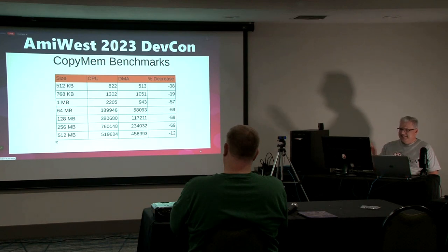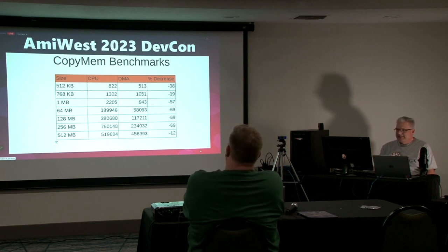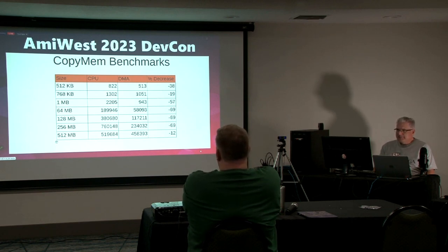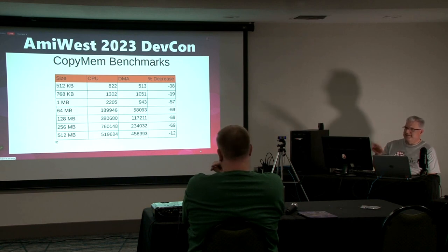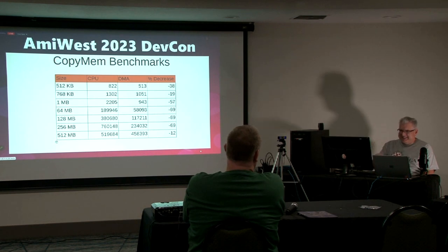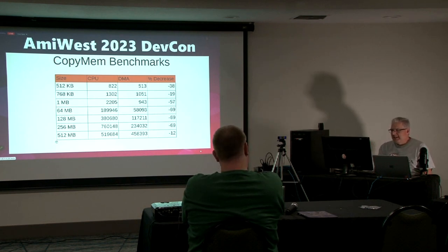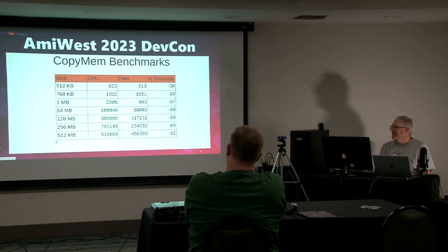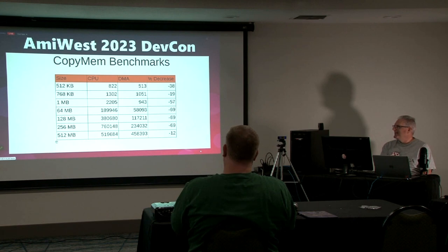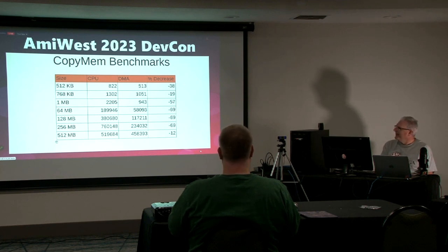We always thought it was going to be fantastic — and it is good. On the left-hand side you can see the size of the buffer or copy being done, and the CPU column shows time — microseconds or similar. As long as the unit of measure is the same for both CPU and DMA, you get a meaningful comparison. I did a percentage decrease to show how much faster DMA is. You can see up to 69% faster on a particular buffer size. Then there's some strangeness — it dropped at 512, which might be a test anomaly or something funky with the DMA engine. But these are actual numbers from a running program.